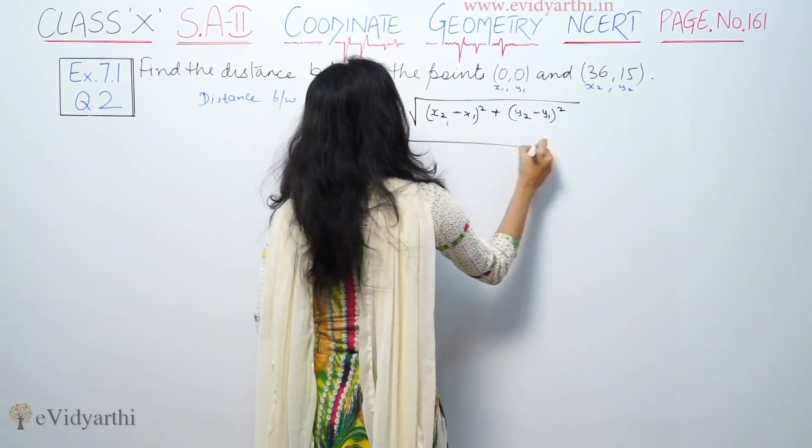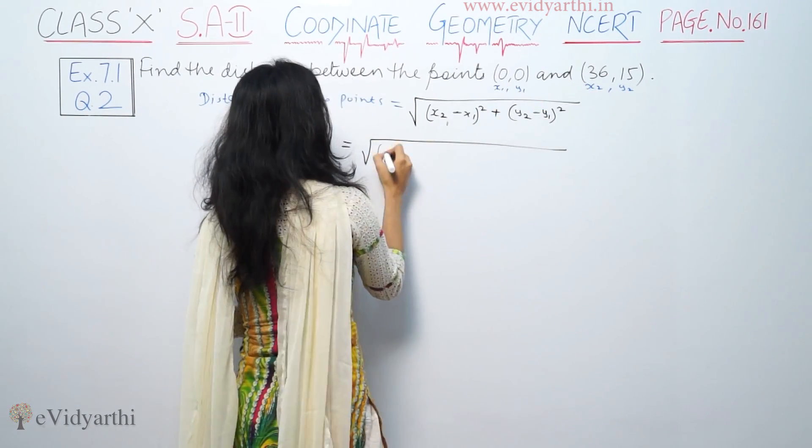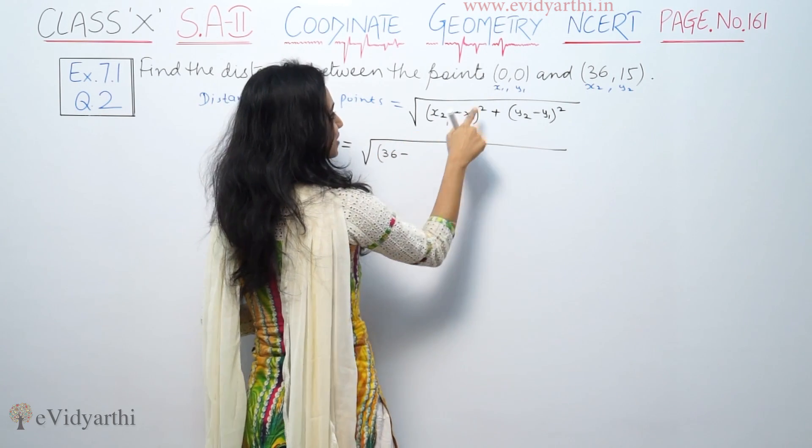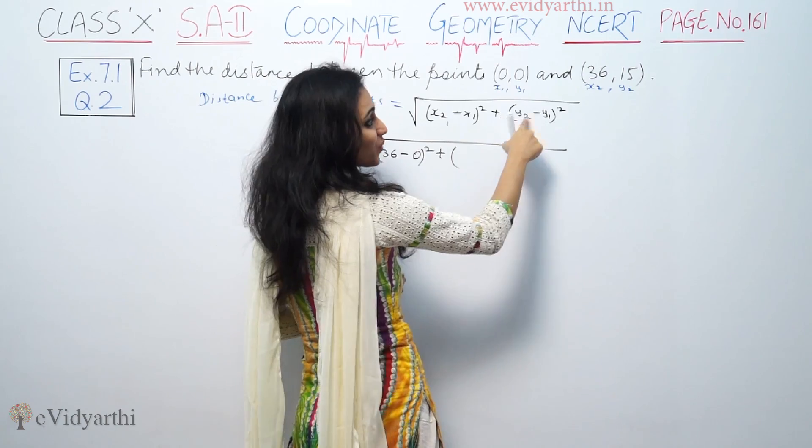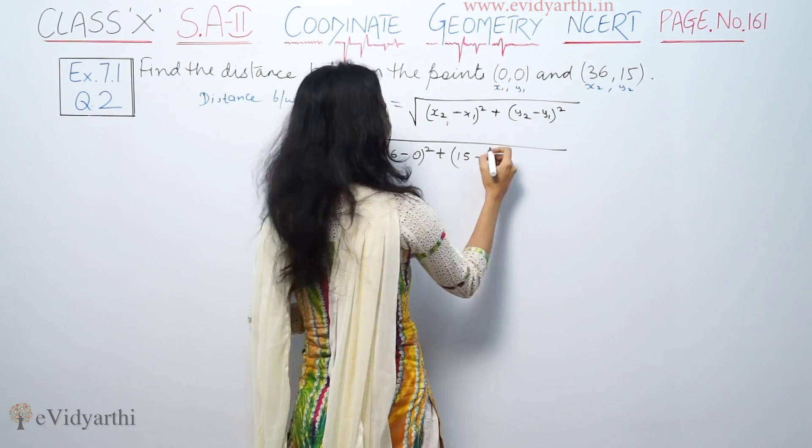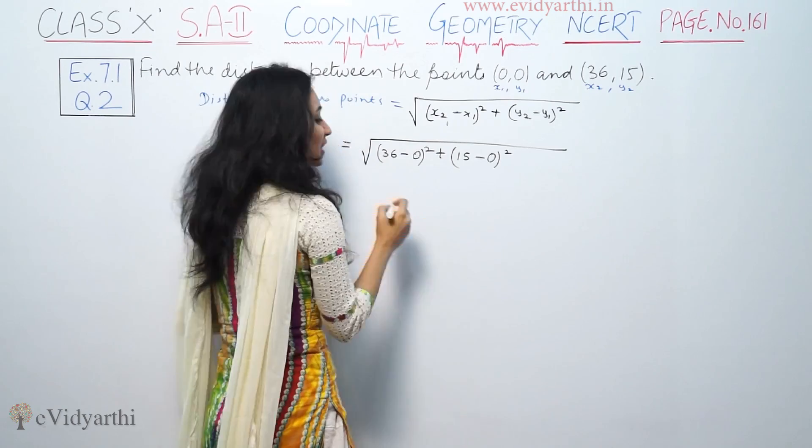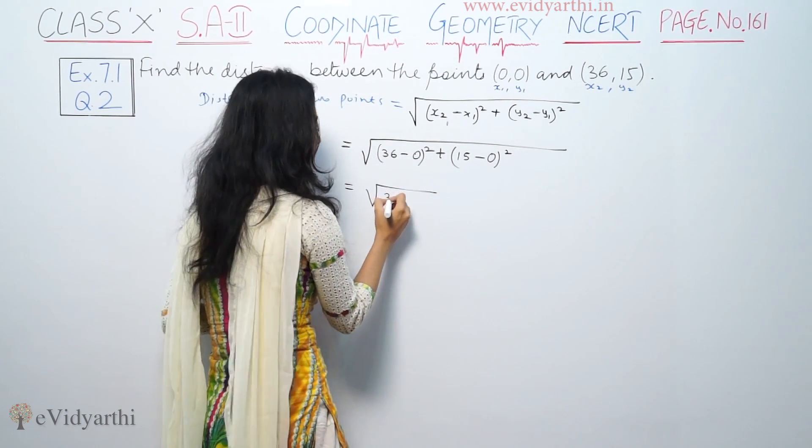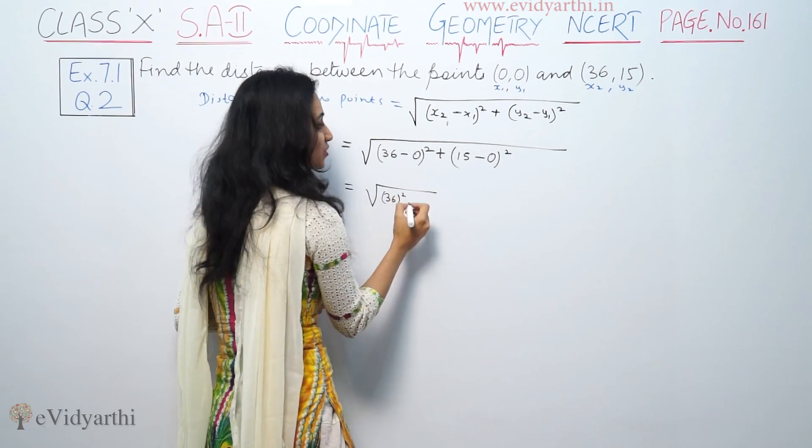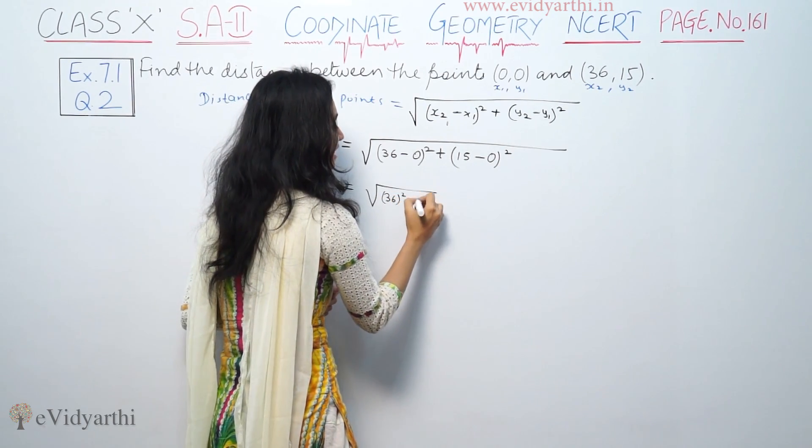Now substitute the values: x2 is 36 minus x1 is 0, whole square, plus y2 is 15 minus y1 is 0, whole square. This equals square root of (36 minus 0) whole square plus 15 whole square.